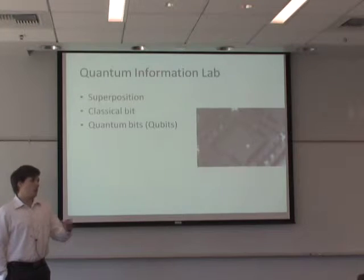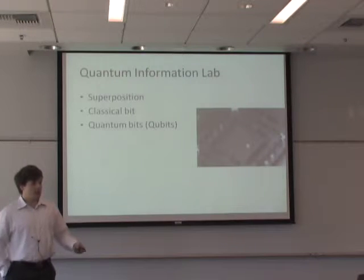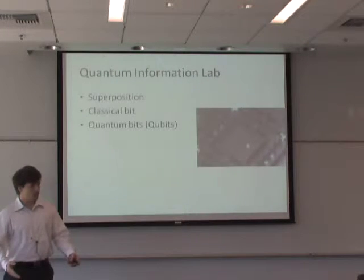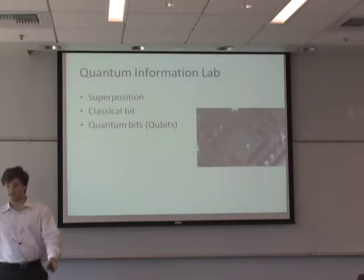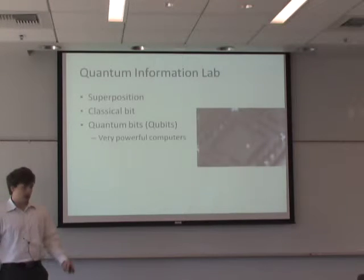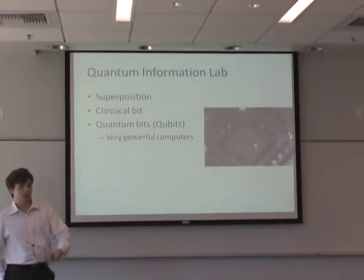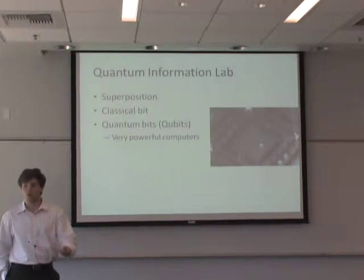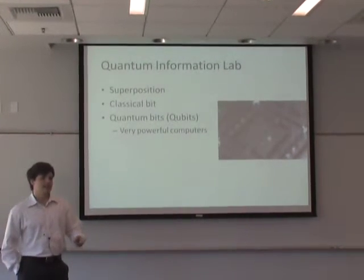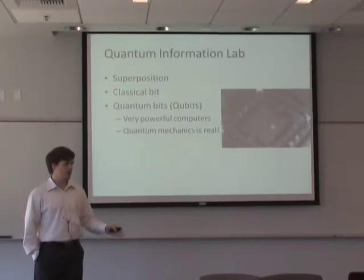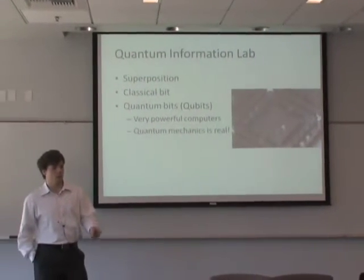One may ask why we care about qubits. Well, if you can couple together enough qubits and make a quantum computer, they'll be very fast — faster than any computer we have today. That's one benefit, though this is still conditional on actually managing to couple qubits together. What we have already shown is that quantum mechanics is real. It's not a weird theory that doesn't represent anything; it's a physical representation of our world.